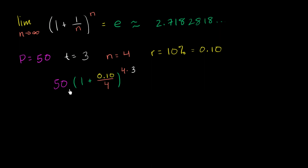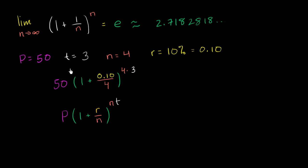In more abstract terms, we can write this as P times (1 + r/n) to the n times t power. You pick your P, t, n, and r, plug them in, and that's essentially how much you're going to have to pay back.